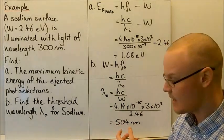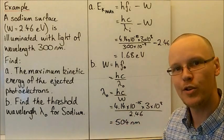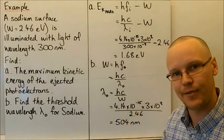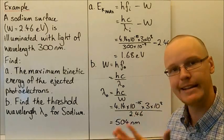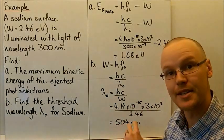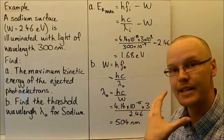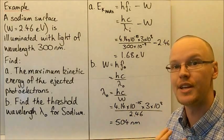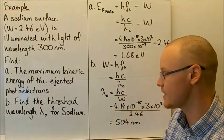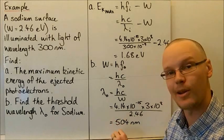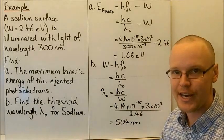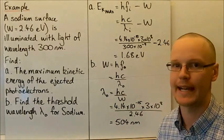The significance of this value: anything greater than 504 nanometres, there won't be any photoelectrons ejected — the energy of the incoming light will be too low. However, if the wavelength is less than this, we will start seeing electrons ejected from the sodium surface. A lower and lower wavelength of incident light will give off more and more energetic electrons — electrons with more and more kinetic energy.